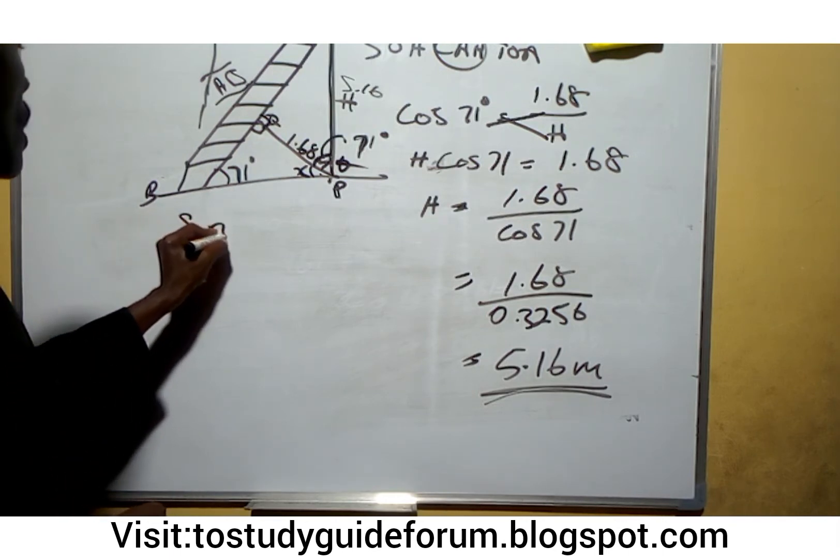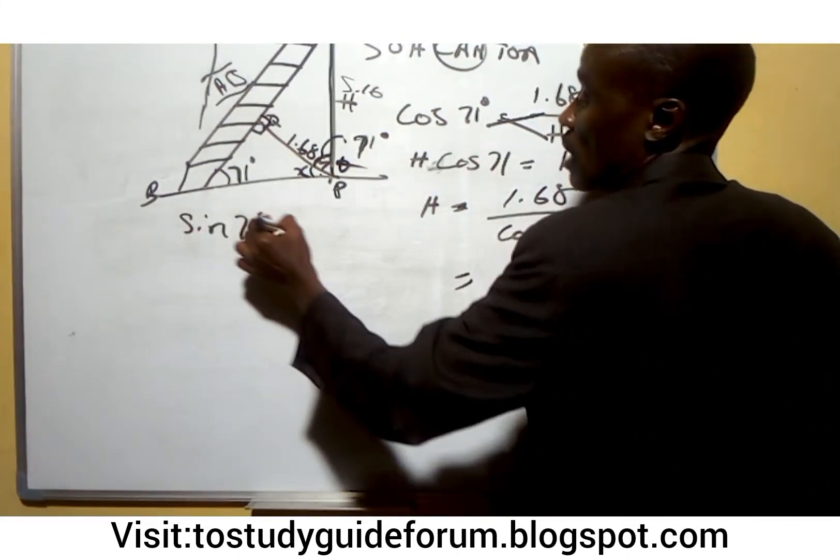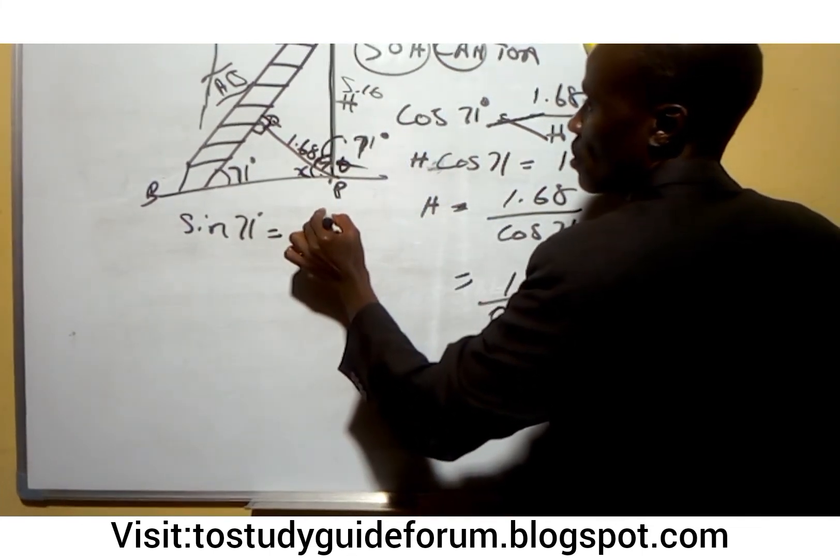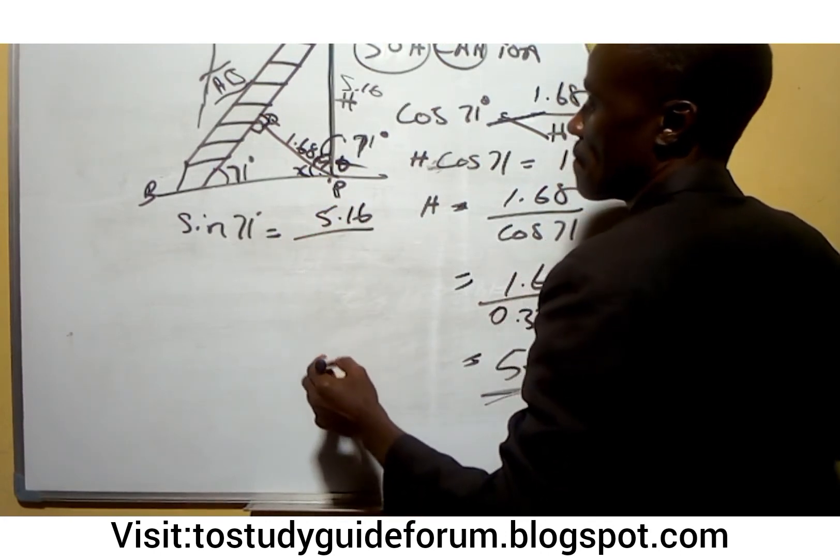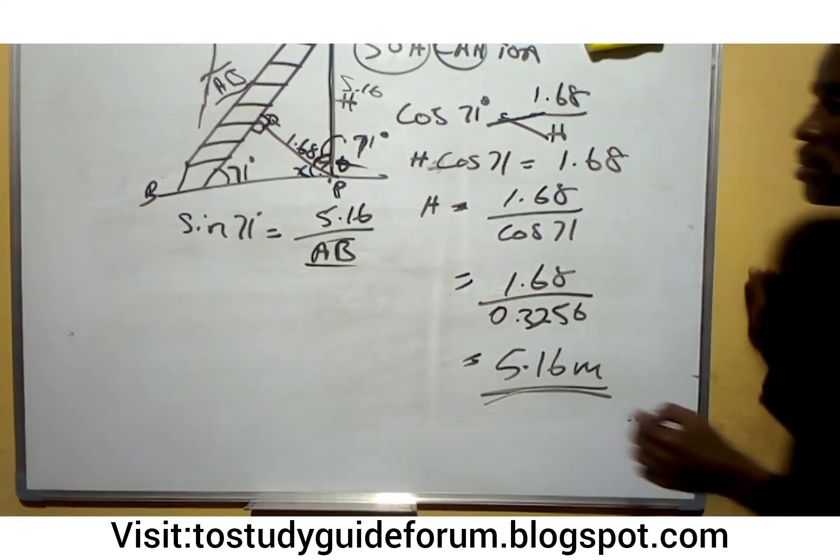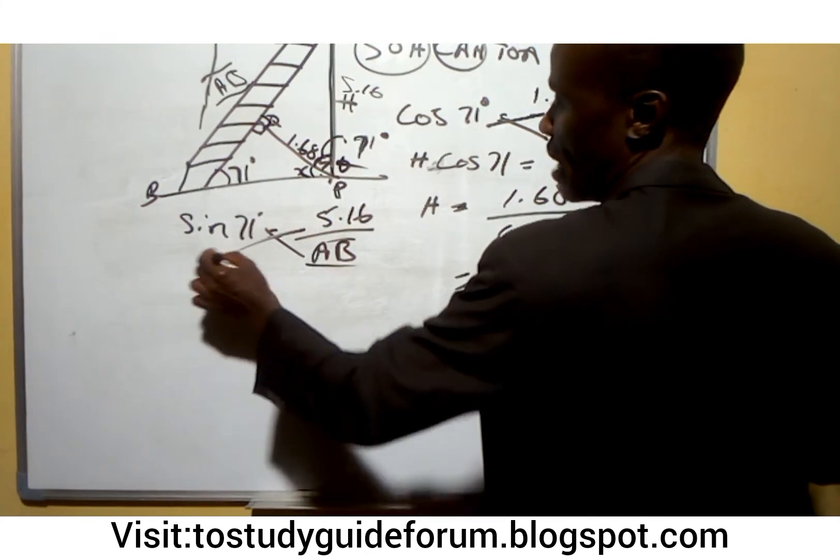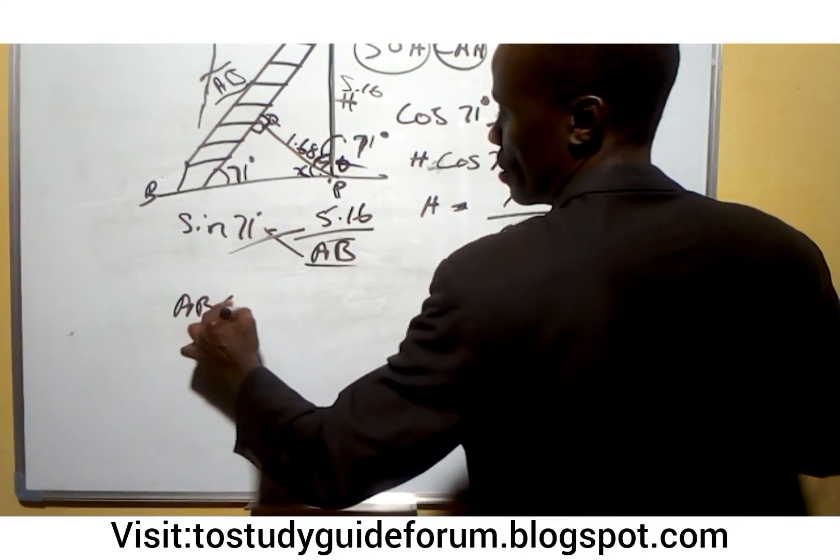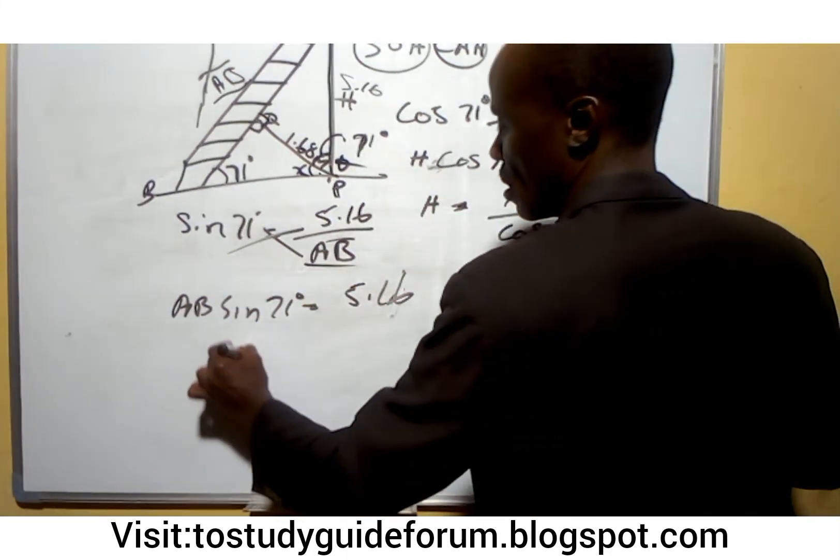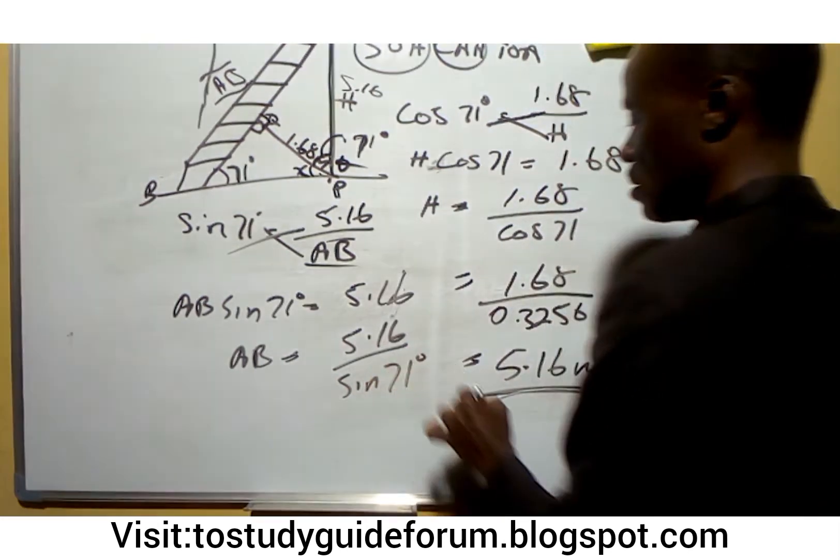Since we have this now, you can see that this one seems to be the opposite to the angle. So what it means is that sine 71 will then give us opposite which is 5.16 over hypotenuse which is AB. If we cross multiply, we have AB sine 71. So AB will then be 5.16 over sine 71 degrees.